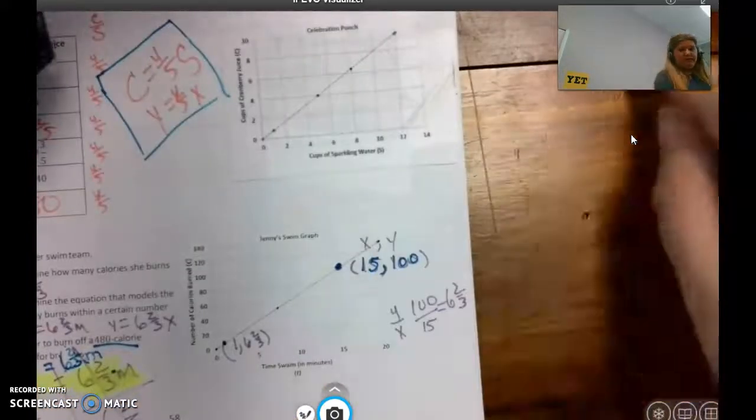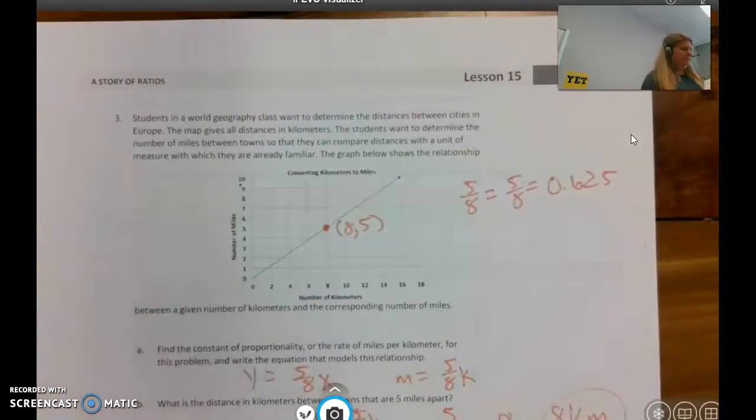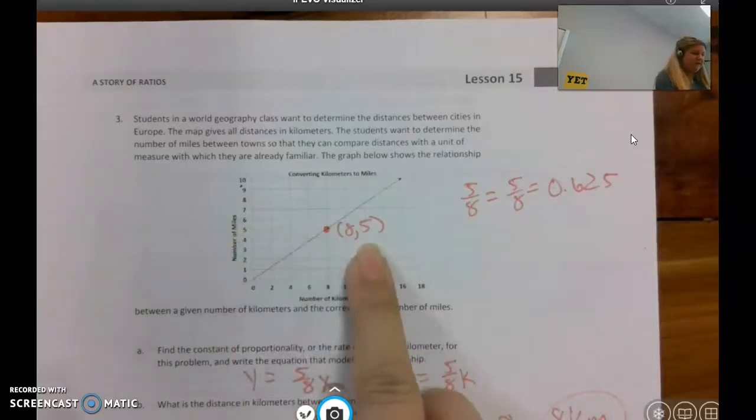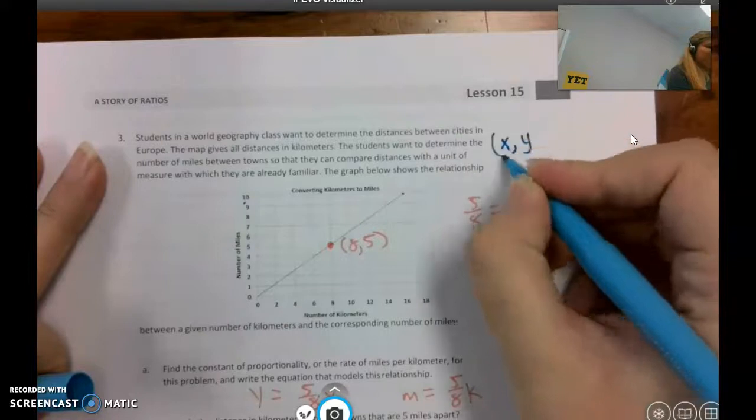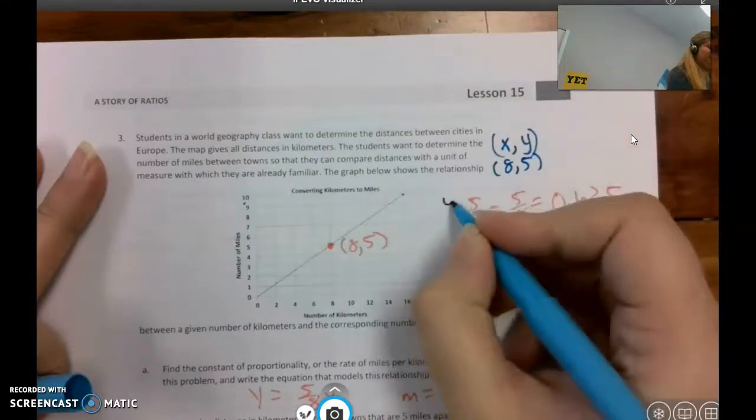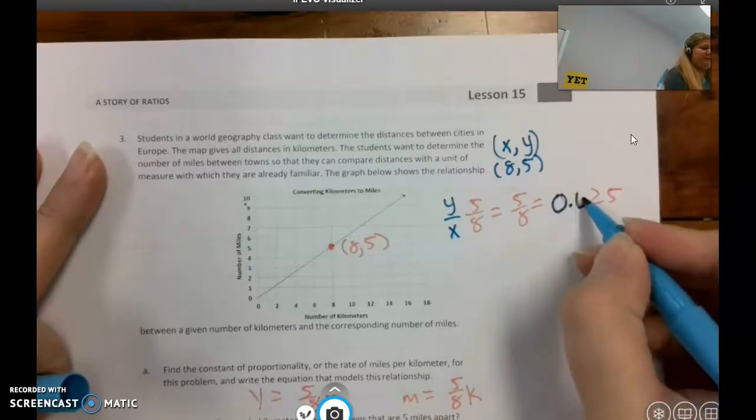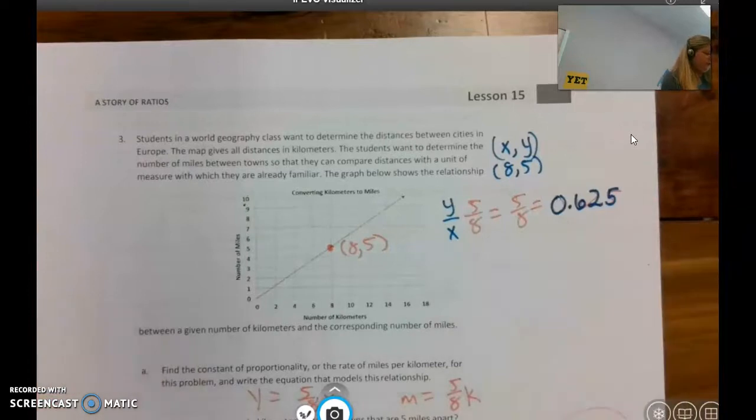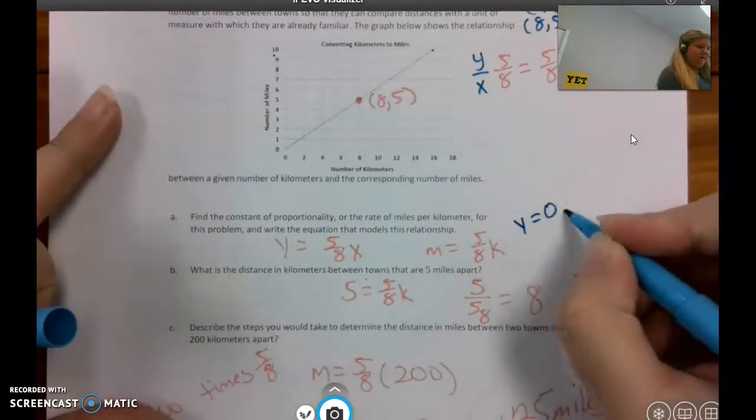Here is number three. So this one was about the world geography class and the distance between cities in Europe. Let's see, so I found a point that I could read very precisely and I have indicated the ordered pair, and again remembering that an ordered pair is x comma y. So I had 8 comma 5, and then if I do y divided by x to find the unit rate, I would do 5 divided by 8 and then have this written in decimal form. Okay, so the constant of proportionality is 5/8, or I could also do this in decimal form if I wanted, and it is 0.625.